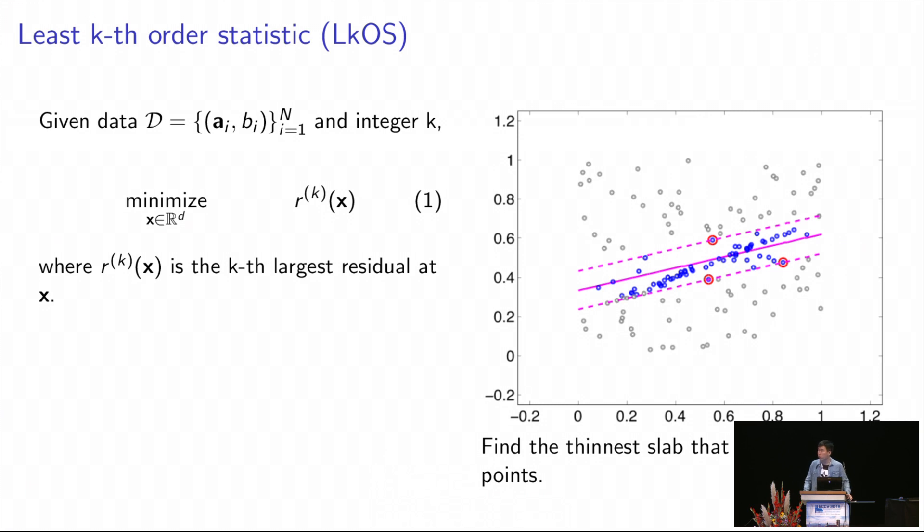So to first show that maximum consensus is actually NP-hard, we first define a new problem called Least Kth Order Statistic, or LKOS. In this problem we want to find the thinnest slab that encloses k of the points.